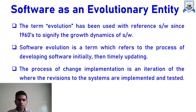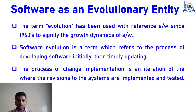The process of Change Implementation is an iteration where revisions to the system are implemented and tested. It is basically an iterative process where updation has to be done in the respective software once the surrounding environment is changing.